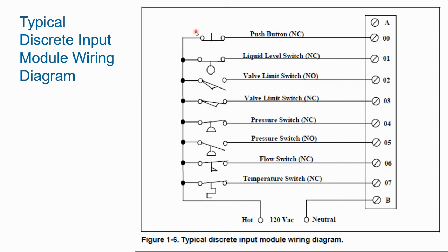From a troubleshooting standpoint, the PLC doesn't know it's a limit switch per se, but if you have the drawing and an input isn't coming on, you can reference it to find which limit switch it is, then go to that equipment and determine why it's not working. It's important to understand how to read these symbols. That's it for the discrete section and we'll pick up in the next video.